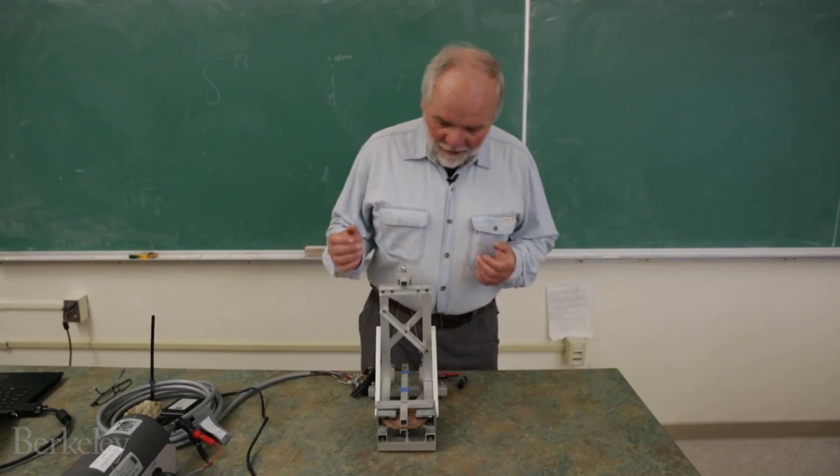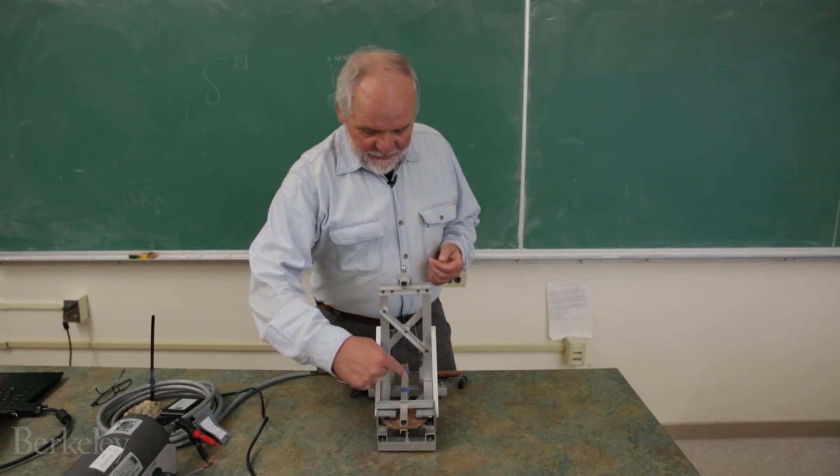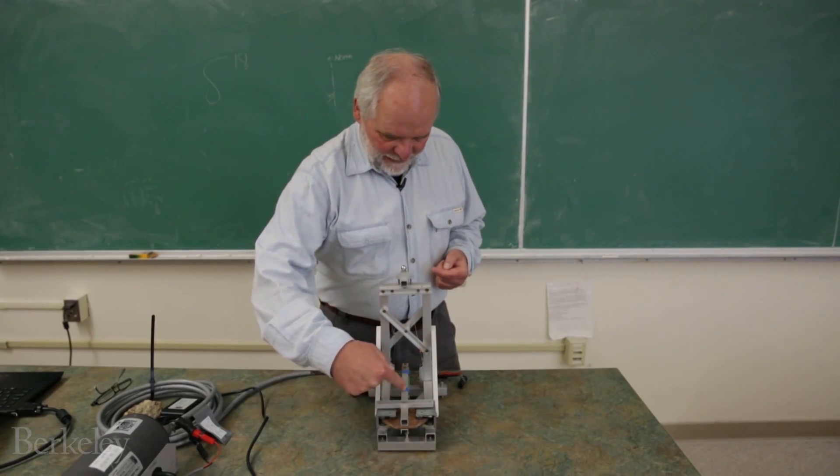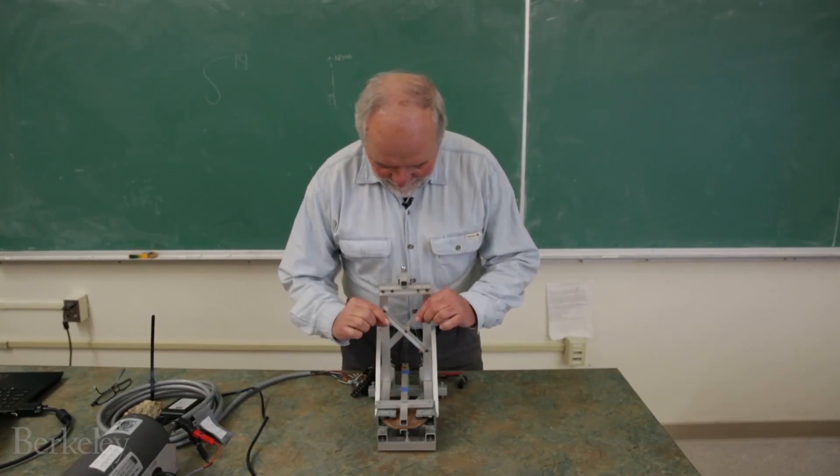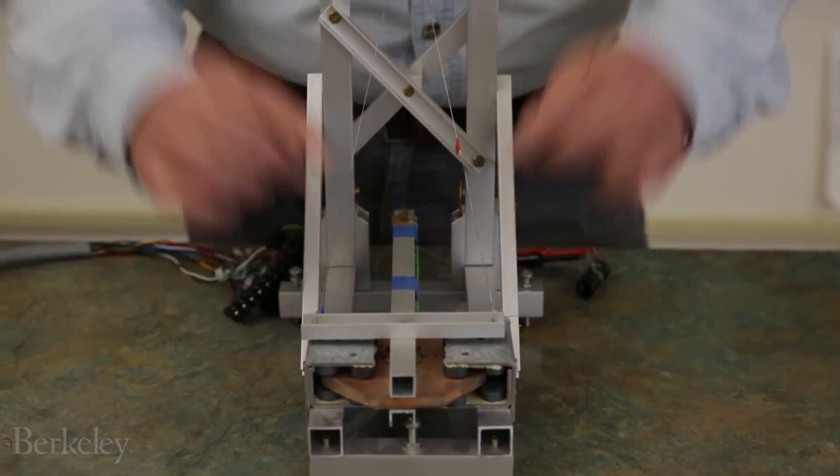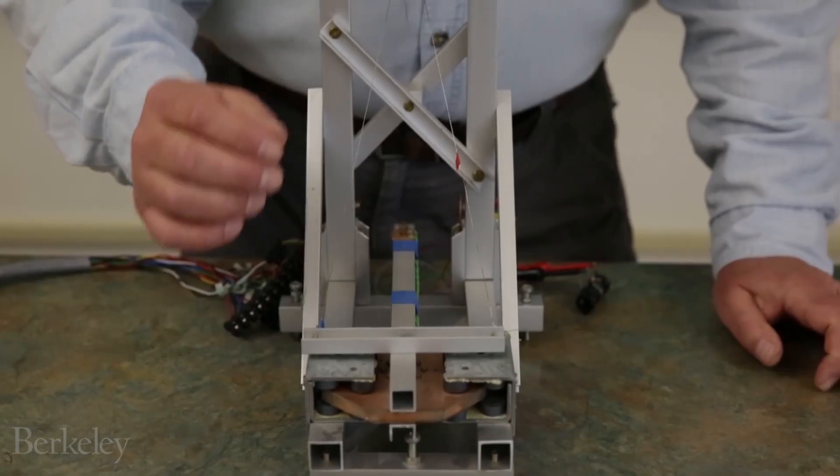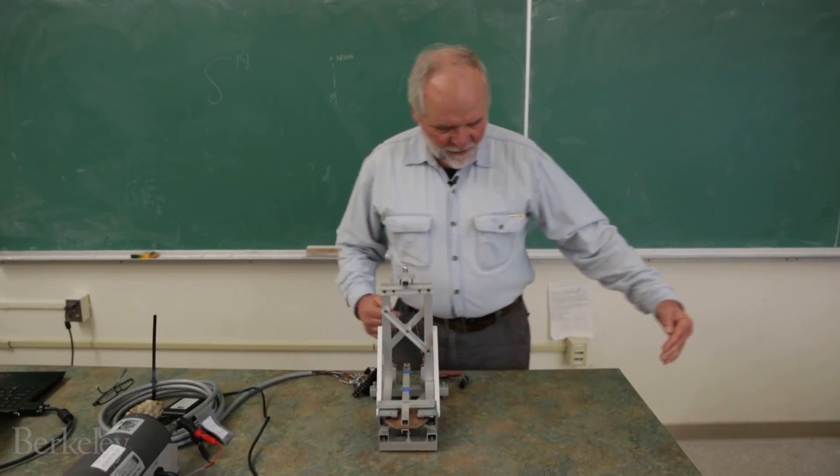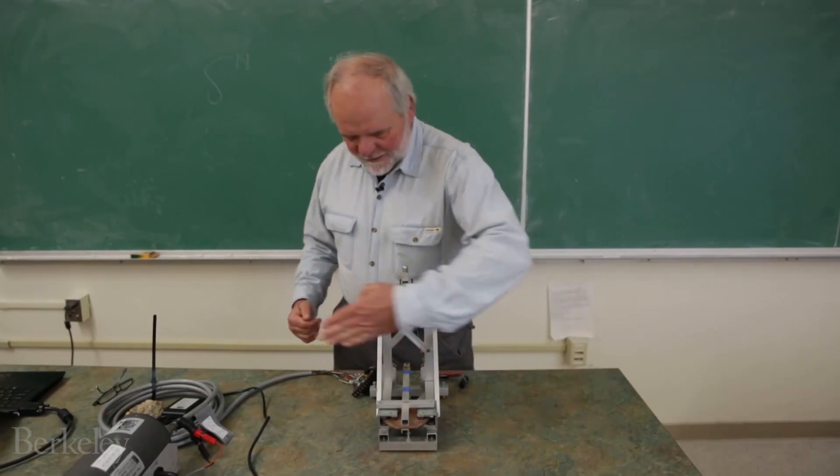The main part is this boom here, and that boom is suspended on two springs. These are these two little strings that you see going up and down like a triangle. When the ground starts shaking in this direction, then this boom would move back and forth like I'm inducing now.